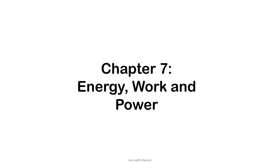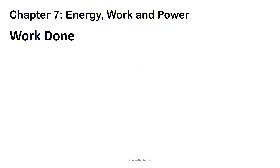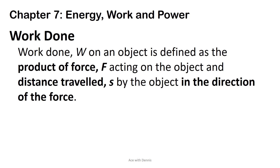Chapter 7: Energy, Work and Power. Work done, W, on an object is defined as the product of force F acting on the object and the distance traveled, S, by the object in the direction of the force.